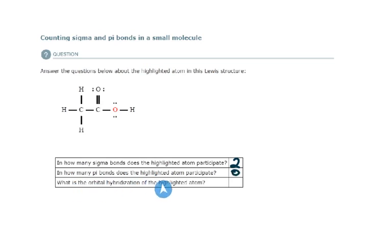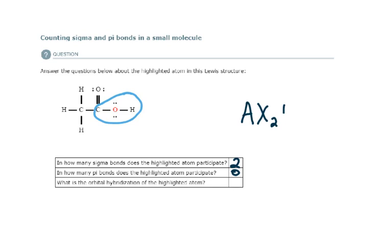They asked what is the orbital hybridization of the highlighted atom. If I look at this atom and imagine it as my central atom, I just look at the atoms bonded directly to that oxygen atom. In AXE notation it would be AX₂E₂. Why? Because there are two atoms bonded to it and two lone pairs of electrons, so I have four electron domains.